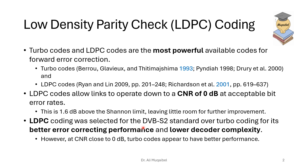LDPC coding was selected for the Digital Video Broadcasting Satellite version 2 standard over turbo coding for its better error correcting performance and lower decoding complexity. Of course there is no free lunch — if the CNR is close to zero then turbo codes appear to have better performance. So there is a trade-off: in general LDPC is better, but there will be some regions where they cross over and turbo codes win.